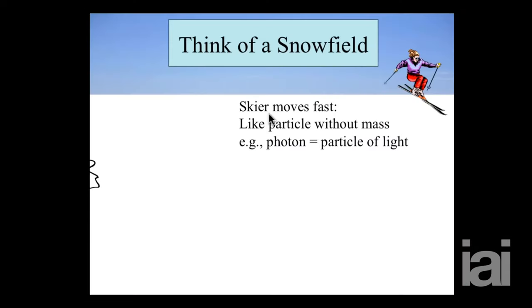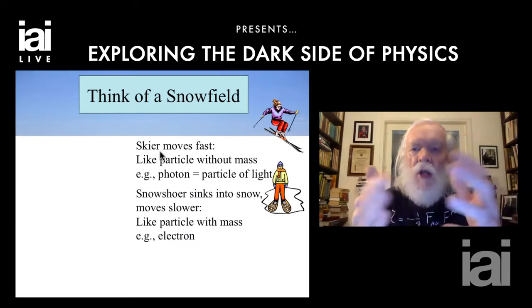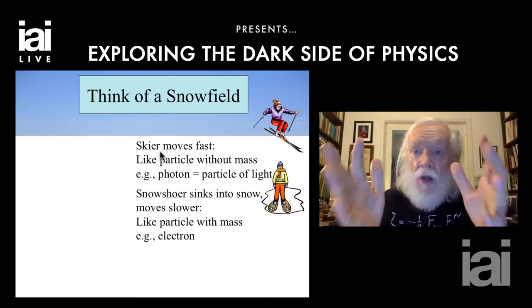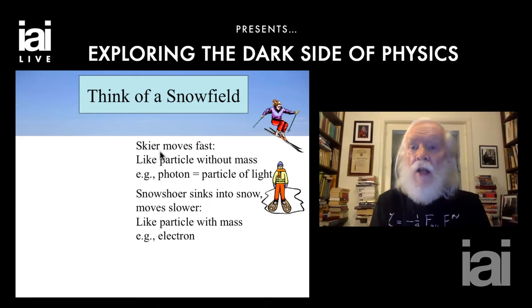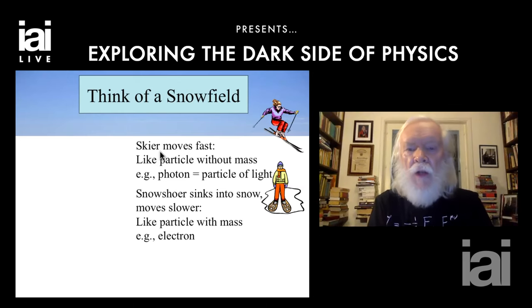No mass, no interaction with Mr. Higgs — you travel at the speed of light. But maybe you have snowshoes. In that case, you sink into the Higgs field, you interact with Mr. Higgs, you go slower than the skier, and that's like a particle with mass like the electron that always travels at less than the speed of light.